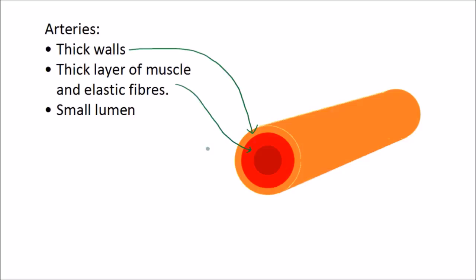It's able to withstand the high pressure, and when you measure your pulse, it's actually the artery stretching that you feel. Lastly, there's a small lumen, which is the bit that the blood actually flows through, and it's small to help maintain the high pressure.